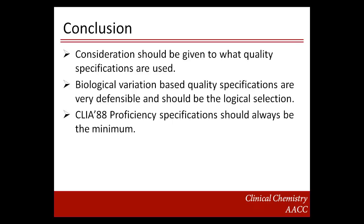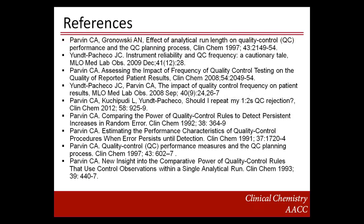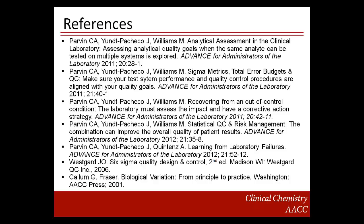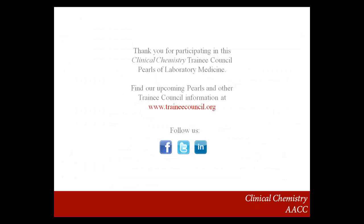In conclusion, consideration should be given to what quality specifications are used. Biological variation-based quality specifications are very defensible and should be the logical selection. CLIA 88 proficiency specifications should always be the minimum. Later in this series, I will discuss the concept of sigma metric and how sigma metric values are related to TEa criteria — so stay tuned. Thank you for joining me on this Pearl of Laboratory Medicine on Allowable Total Error from the QC Design Things You Need to Know series. I am Lakshmi Kuchipudi.